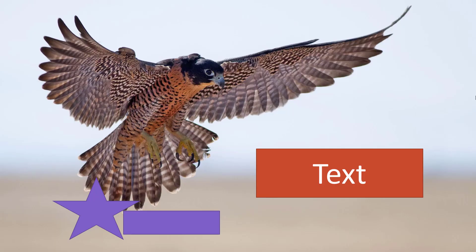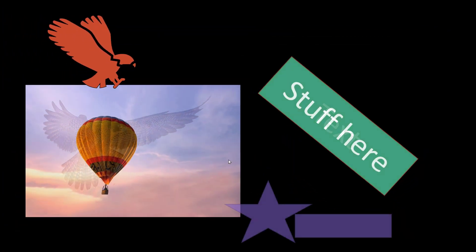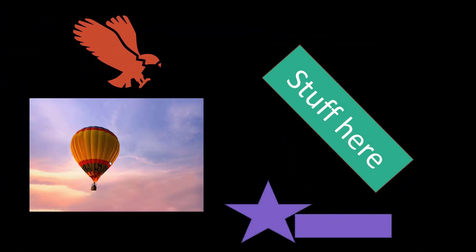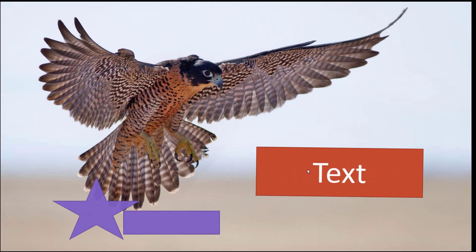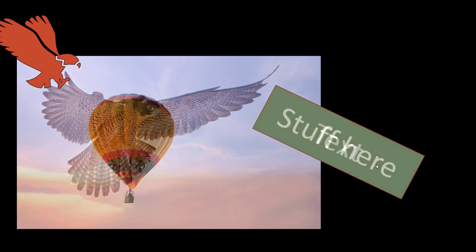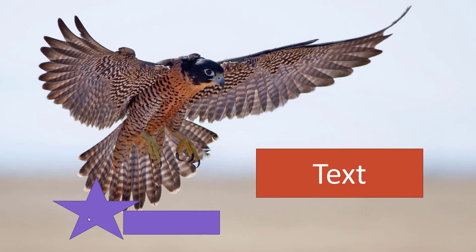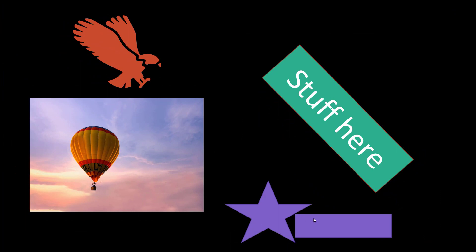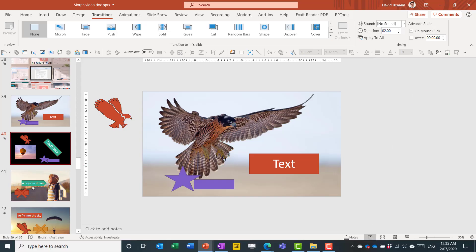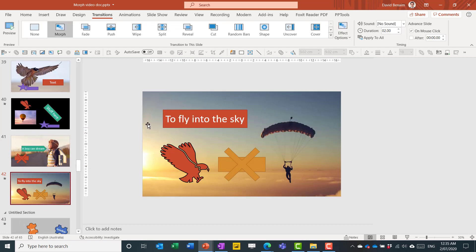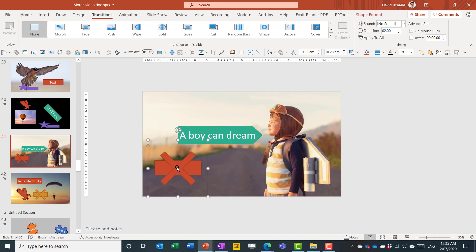You can go beyond the basics. You can use Morph to transition a bird image into a balloon image, going from one picture to another. You can also change text in a different way, have an object fly in, or stop a Morph so that instead of moving, an object fades out and fades back in. Let me show how to do those.